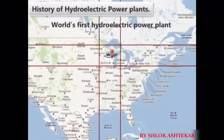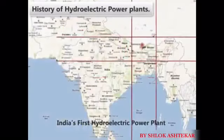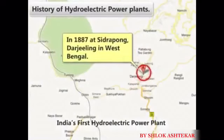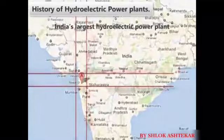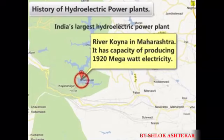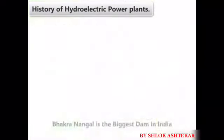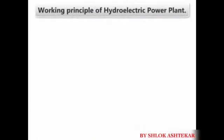The world's first hydro-electric power plant was built across the Fox River in Appleton, Wisconsin, US, in the year 1882. India's first hydro-electric power plant was commissioned in 1887 at Sidrapong, Darjeeling in West Bengal. India's largest hydro-electric power plant is located across the river Koina in Maharashtra, with a capacity of producing 1,920 megawatts of electricity. Bhakra Nangal is the biggest dam in India as well as the world's highest straight gravity dam.